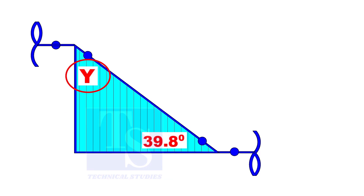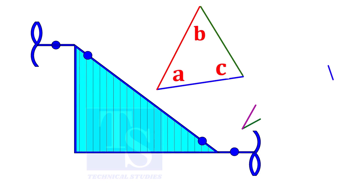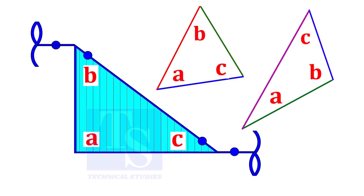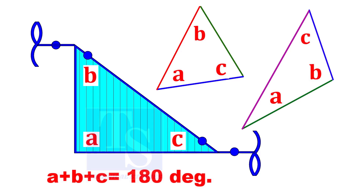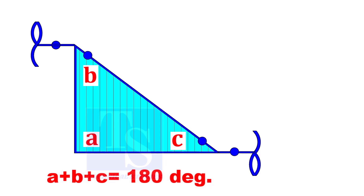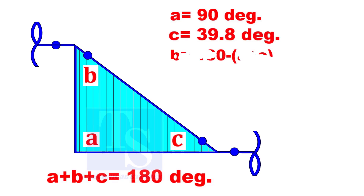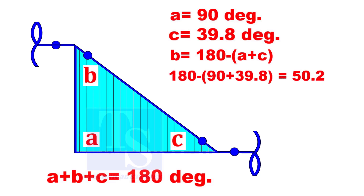Can you calculate the value of angle Y? In any triangle, the sum of angles A, B, and C is 180 degrees. In this case, we know angle A is 90 degrees and angle C is 39.8 degrees. Angle B is 180 minus the sum of angles A and C, so the value of angle B is 50.2 degrees.